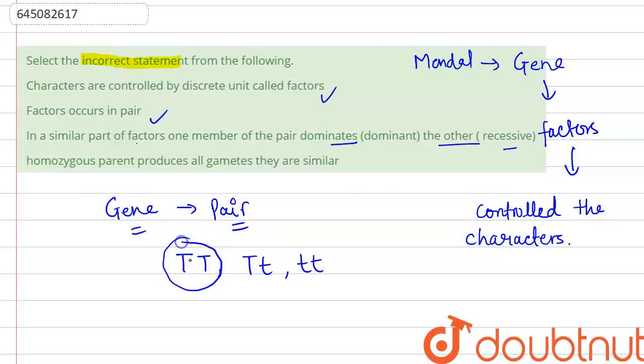both are similar, no one can be dominant. In case of dissimilar, in such case one dominates and the other can be recessive.